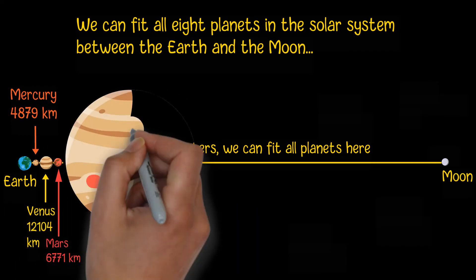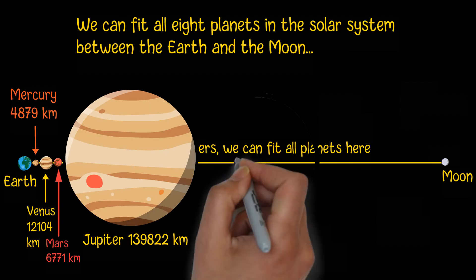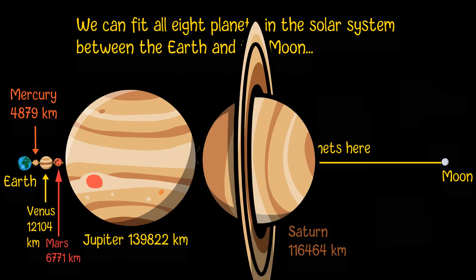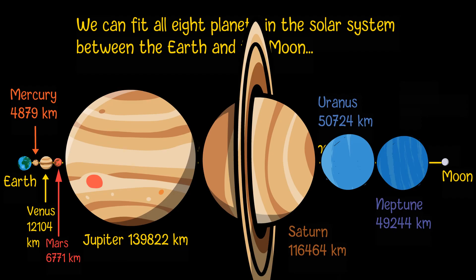Jupiter with a diameter of 139,822 kilometers, Saturn with a diameter of 116,464 kilometers, Uranus with a diameter of 50,724 kilometers, and Neptune with a diameter of 49,244 kilometers.